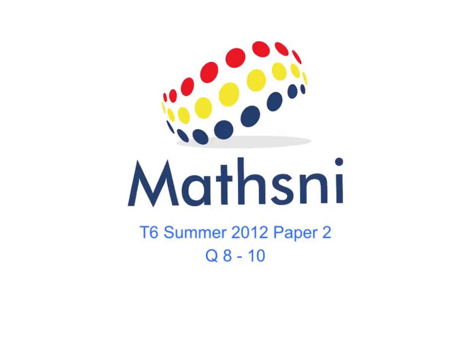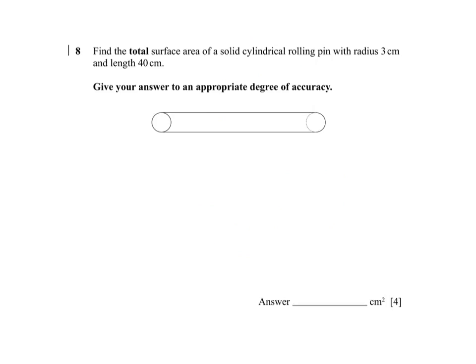Summer 2012 paper 2. So we have a cylindrical rolling pin. The first thing we need to know is the surface area. We are going to have circles at the top and the bottom which are identical and we can see that they